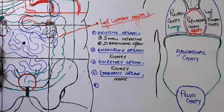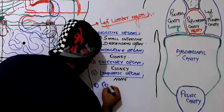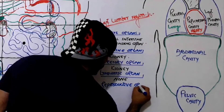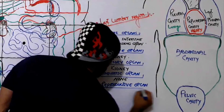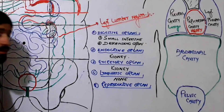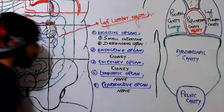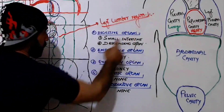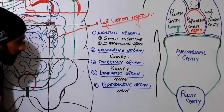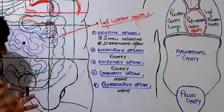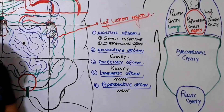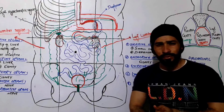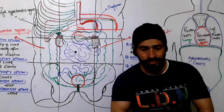Are there any reproductive organs in the left lumbar region? No, none of the reproductive organs are found here. So to summarize, the organs present in the left lumbar region are: digestive organs, endocrine organs, excretory organs, and no lymphatic or reproductive organs. See you in the next lecture on the organs present in the umbilical region. Thank you so much, Allah Hafiz.